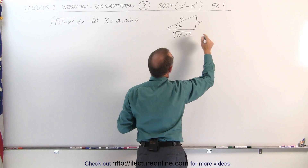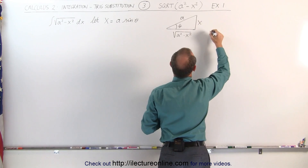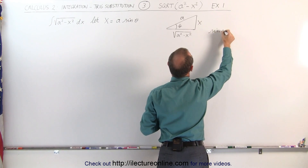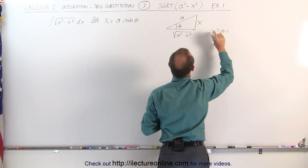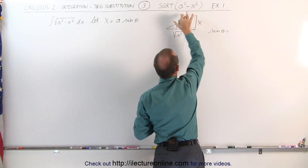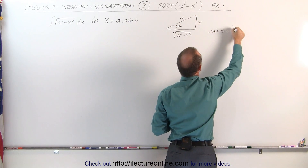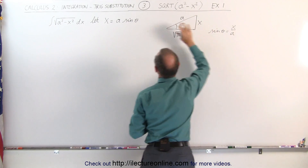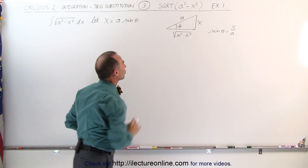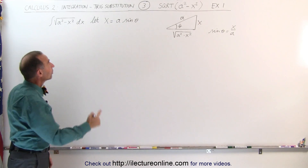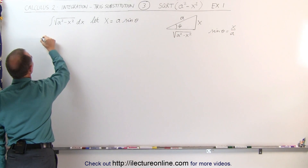You can see that the sine of theta, by definition, is going to be equal to the opposite side divided by the hypotenuse, which is x over a, and that's where this trig substitution came from. Now let's go ahead and substitute and see what we get.